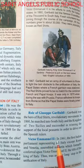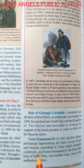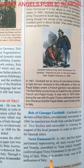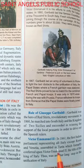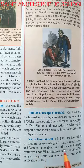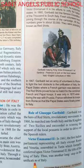Victor Emmanuel II. In 1861, the first Italian parliament representing all Italy except Rome and Venetia assembled in Turin formally conferred upon Victor Emmanuel II the title of King of Italy. This was another long step in the unification of Italy.